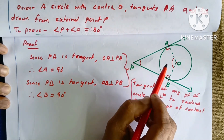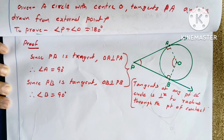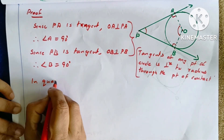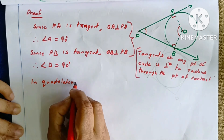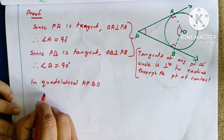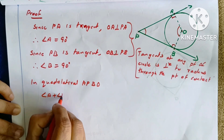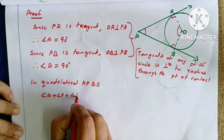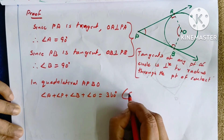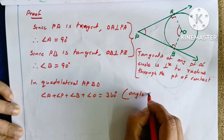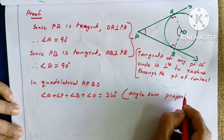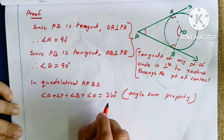In quadrilateral PAOB, the sum of all angles equals 360 degrees. So angle A plus angle P plus angle B plus angle O equals 360 degrees. The reason is the angle sum property of a quadrilateral.